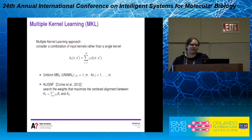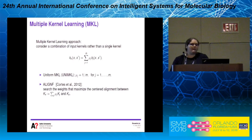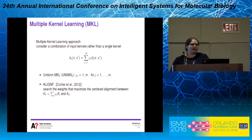With 24 input kernels available, we decided to combine them rather than using a single kernel, using a linear combination. We tried two approaches for defining the weights. The first, called Uniform MKL, gives the same weight to all kernels — very simple, but it generally performs quite well. The second, AlignF, learns the weights by maximizing the alignment between the combined input kernel and the output kernel.